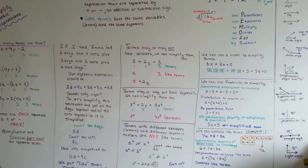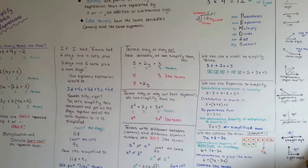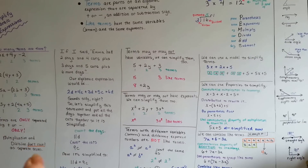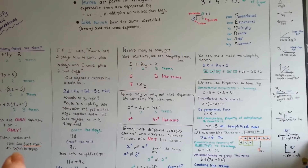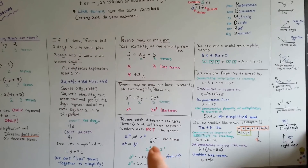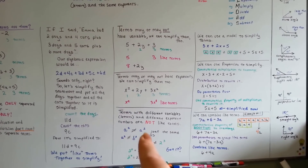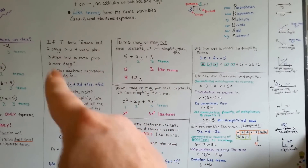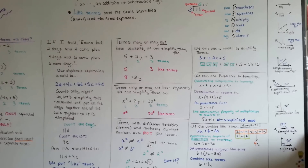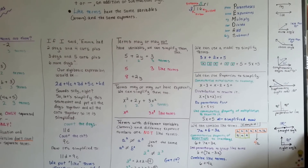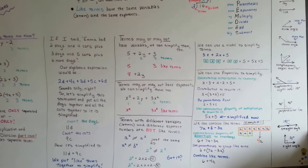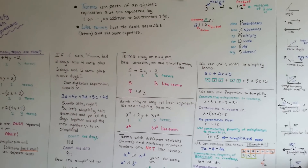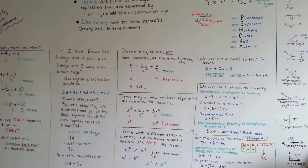So now you know that plus signs and minus signs — addition and subtraction signs — separate terms, and that multiplication and division don't count to separate terms. You know why something to the second power is not the same as to the third power, and you know that we need to combine like terms so we don't have crazy mixed-up statements and expressions. And you know that we can use models and properties to simplify. I'll see you next video — keep up the good work, you can do this, you're doing fine.